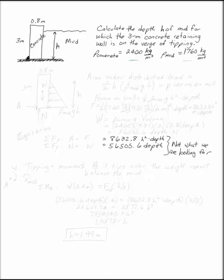Calculate the depth of mud, H, for which the 3 meter concrete retaining wall starts to tip over. You're given that the density of concrete is 2400 kilograms per meter cubed, and the density of the mud is 1760 kilograms per meter cubed.